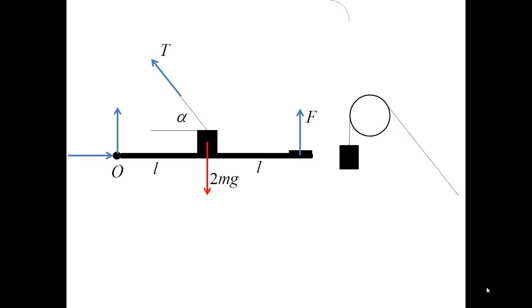The second free body diagram involves the pulley and the counterweight. I begin with showing the mass of the counterweight, the constraints on the pulley imposed by the pin, and finally the force T.